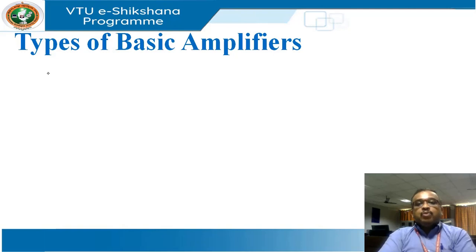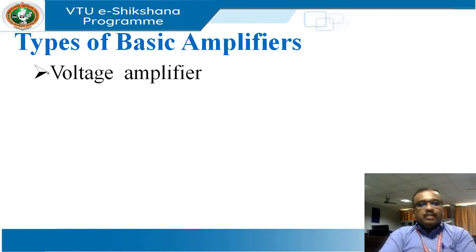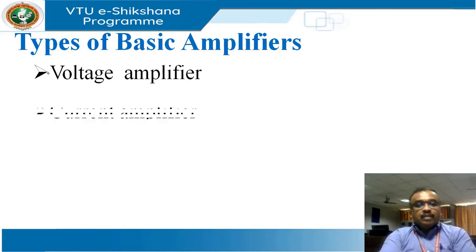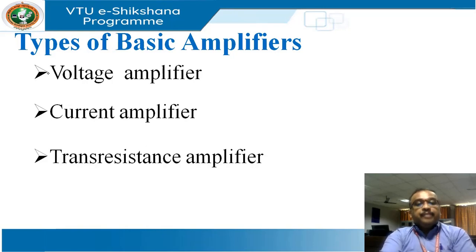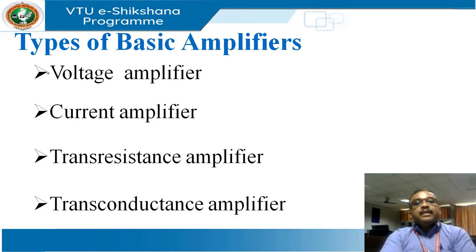Before getting into topologies, we must know the basic types of amplifiers available. We are very familiar with the voltage amplifier and think that is the only kind, but we are wrong. The first type is the voltage amplifier, then we have a current amplifier, a trans-resistance amplifier, and lastly a trans-conductance amplifier.